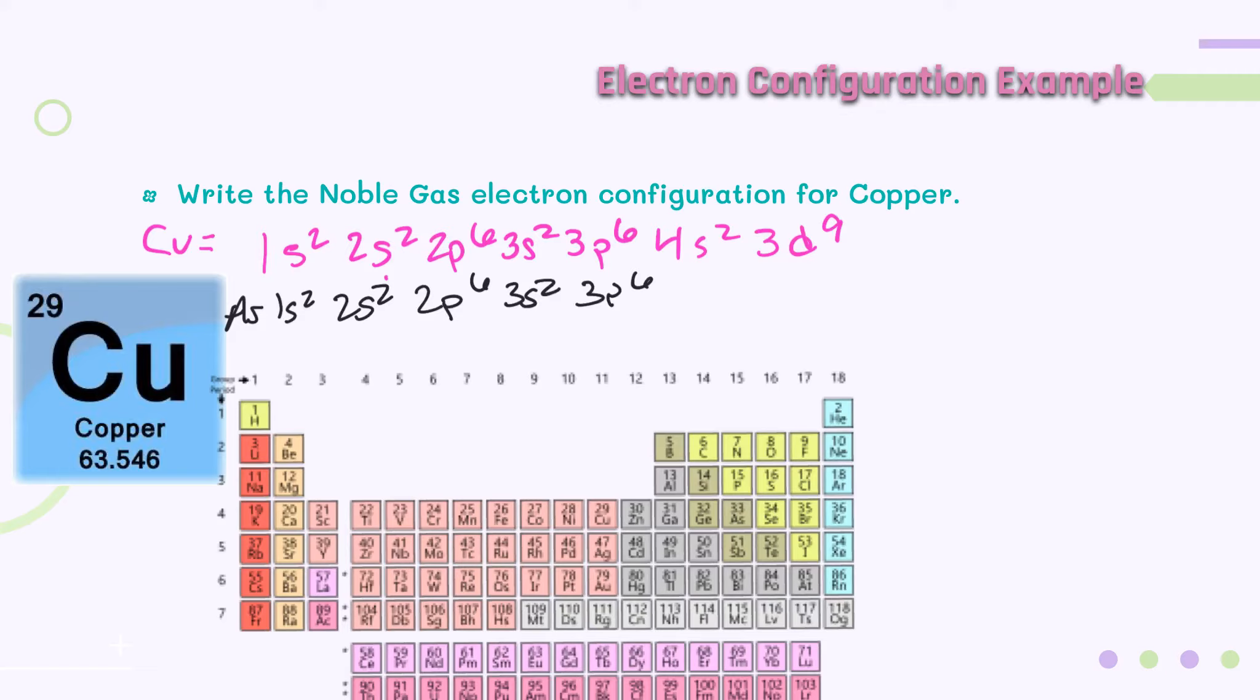So if we look at the periodic table, copper is right here. The noble gas that is directly in the row directly above is argon. Argon's electron configuration is 1s2, 2s2, 2p6, 3s2, 3p6.